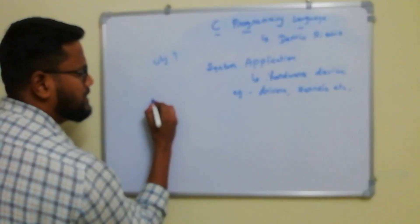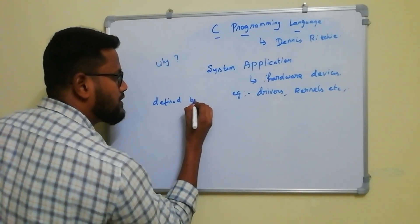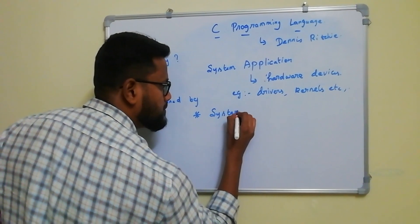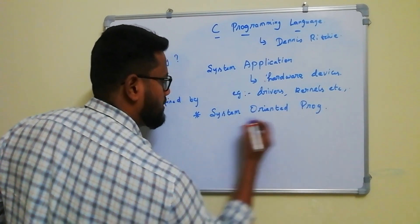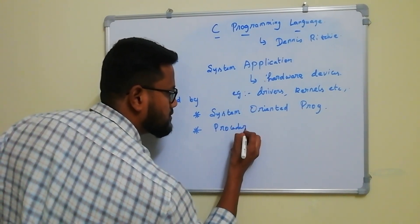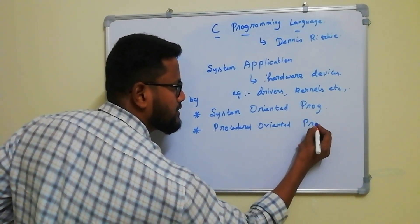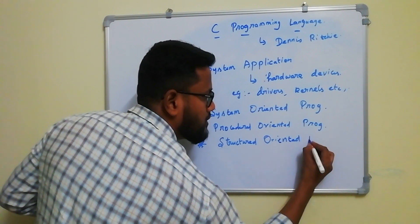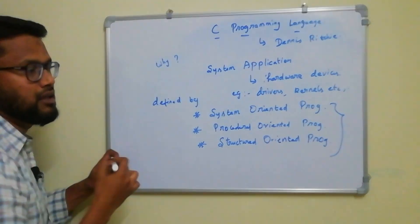C programming is defined by some main steps: system oriented programming, procedural oriented programming. These are the definitions of C programming.